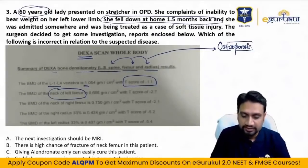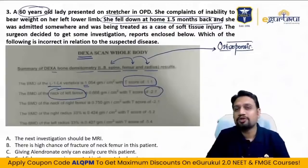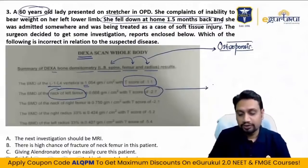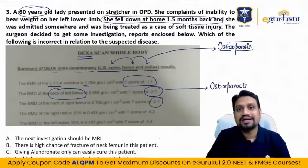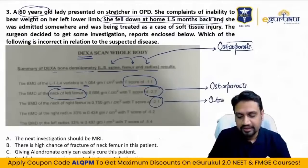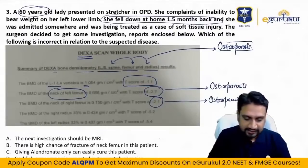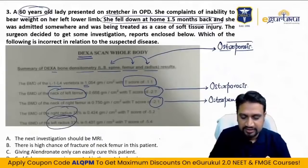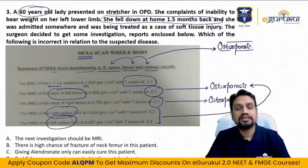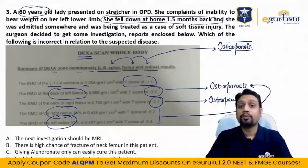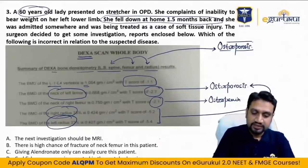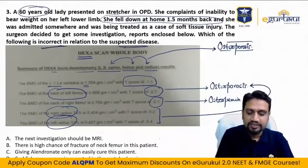Right neck of femur T-score is minus 2.1 — that signifies osteopenia. Right and left radius: minus 5.2 and minus 5.4 — severe osteoporosis. We have diagnosed this lady as severely osteoporotic, unable to bear weight on her left lower limb. The gold standard to diagnose osteoporosis is the DEXA scan.